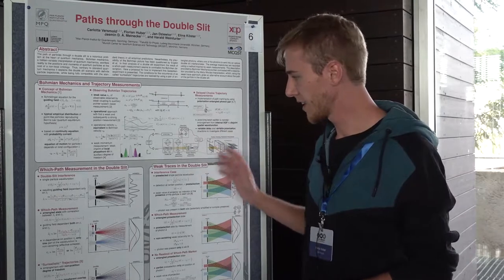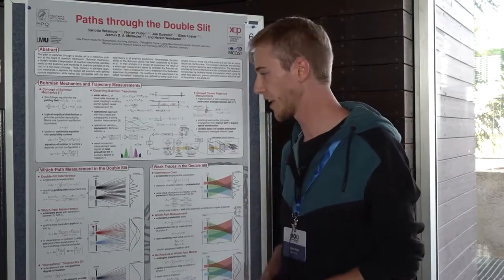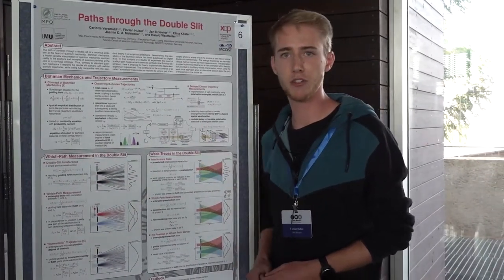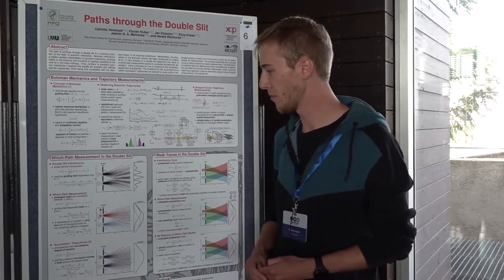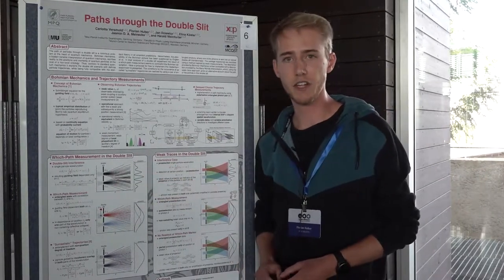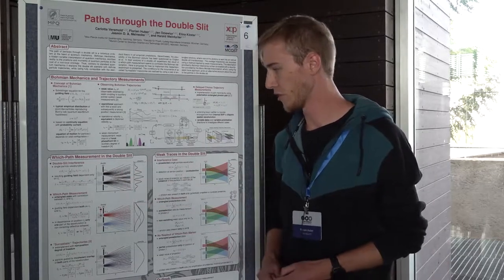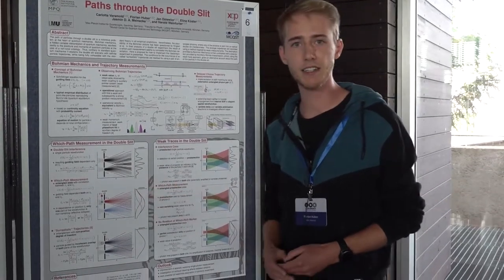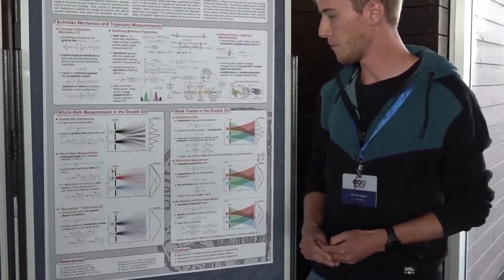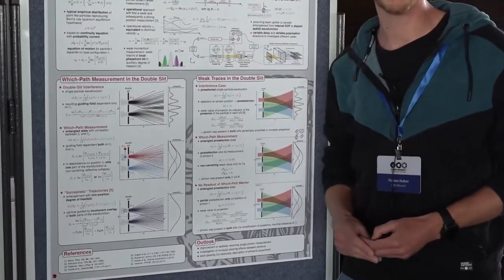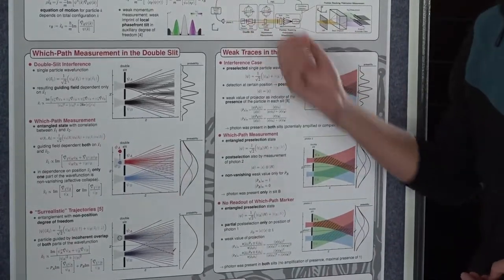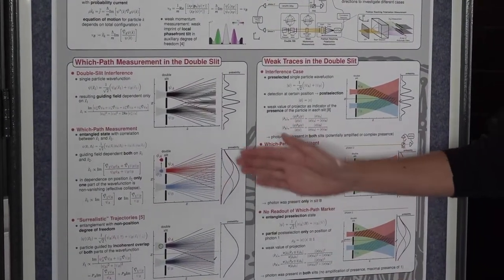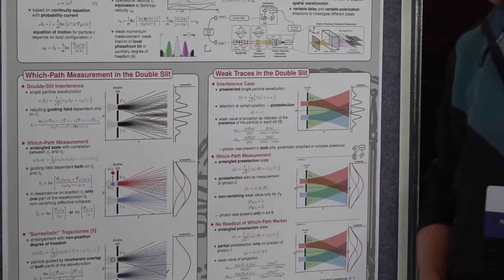In this double-slit experiment we have three different cases. The first case we get when we remove the entanglement to the second photon — so we have no which-path information — and therefore we can see the interference pattern, which is also fully shown with the Bohmian trajectories. The second case we get when we measure the polarization of the second photon before the photon enters the double-slit, and in this case we get the classical expected pattern.